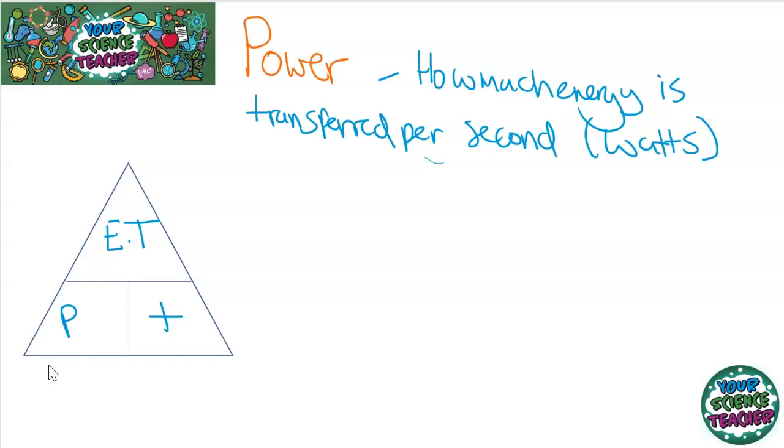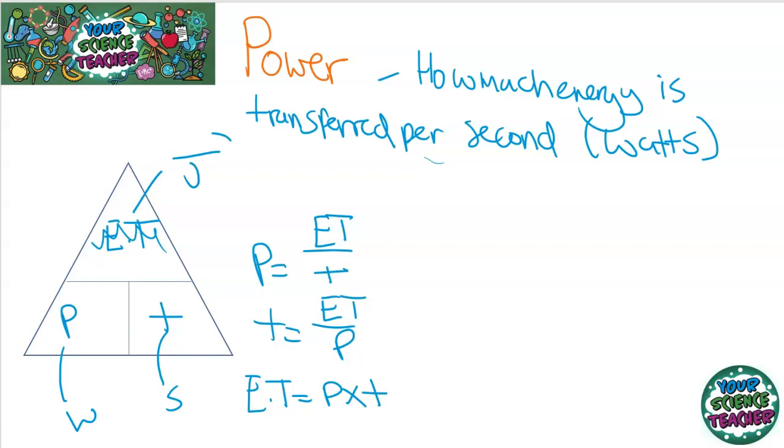Now, just like with the other examples, we are going to go through the calculation triangle. So power, if I cover that up, that will equal energy transferred divided by time. Time will equal energy transferred divided by power. And energy transferred equals power times time. And we should have got the units down to a T by now. Time is measured in seconds. Power, like I said, was measured in watts. And energy transferred, because it's an energy, like all energies are measured in joules.